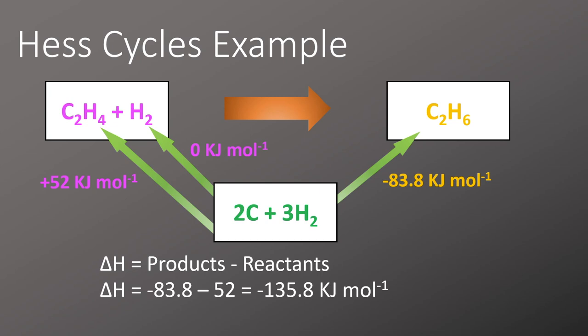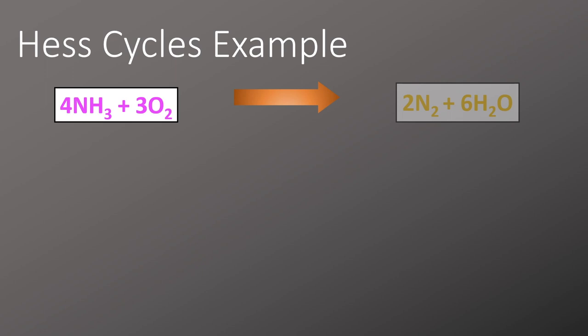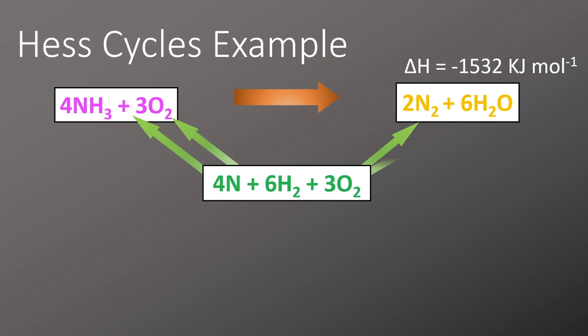This is a slightly more complicated example. In this example we're given the overall enthalpy change for the equation but asked to work out the enthalpy change of formation for water. We set up the Hess cycle just like before writing out the elements and then drawing on the arrows and adding in the data from the question. Once you have all that in place it's time to start the calculations.